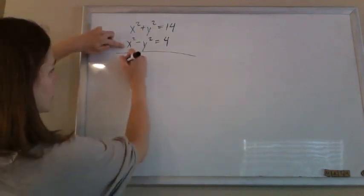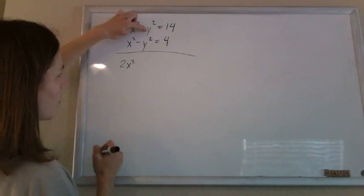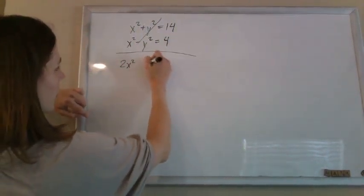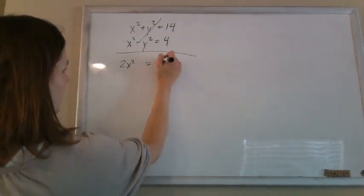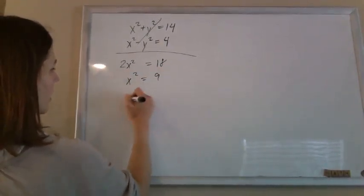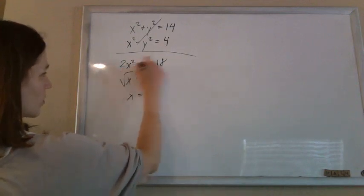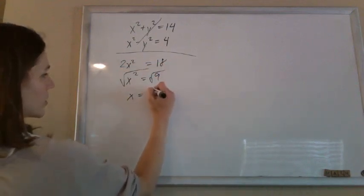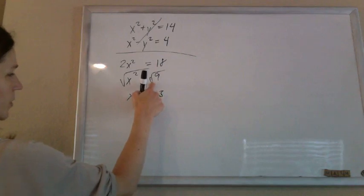So x squared plus x squared is 2x squared. y squared minus y squared will vanish. 14 plus 4 is 18. Just solve this now. Divide by 2. x squared is 9. Take the square root of both sides. So plus or minus 3 for the square root of 9.